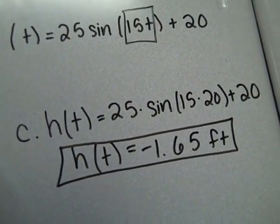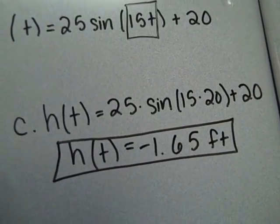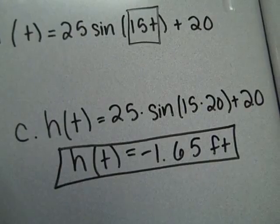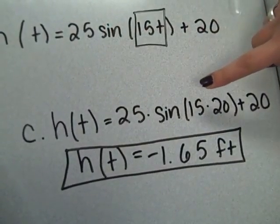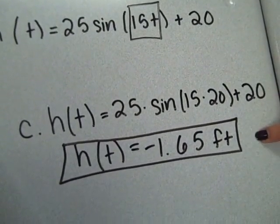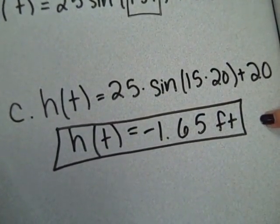Then for c it says to calculate the height of a person starting at the 3 o'clock position after 20 seconds. So to find the height we plugged in 20 for the time and then we ended up getting negative 1.65 feet.